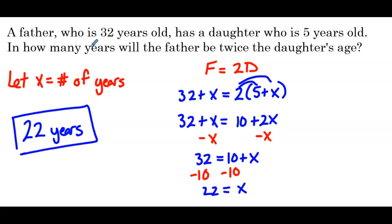We can check that: in 22 years he would be 54 and she would be 27, and that is true. They could have also asked how old would the father be or how old would the daughter be, but in this case they just asked how many years until this is true.